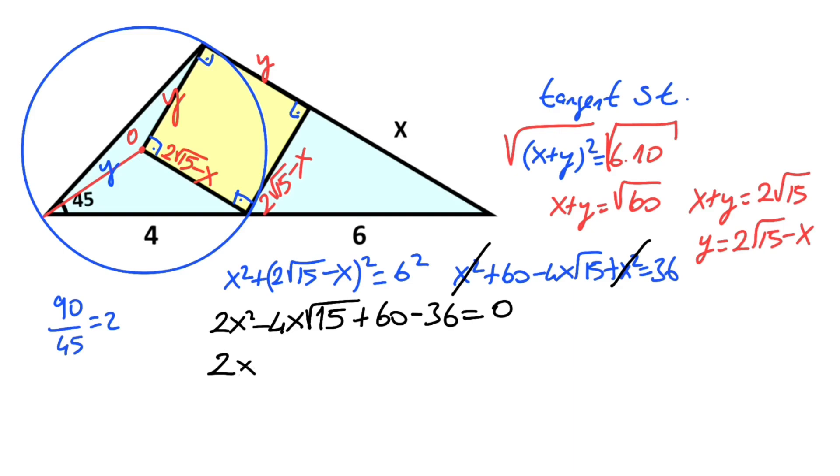So 2x squared minus 4x root 15 plus 24 equals 0. Dividing by 2, we get x squared minus 2x root 15 plus 12 equals 0.